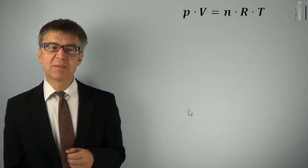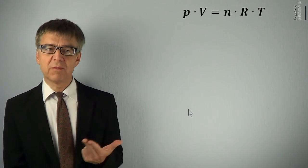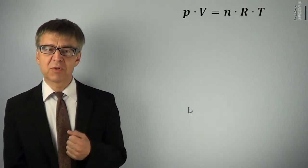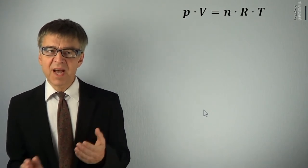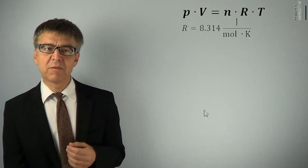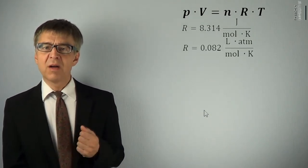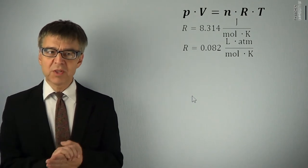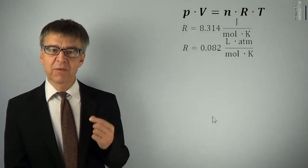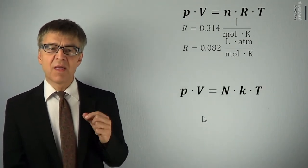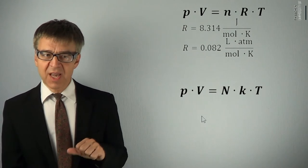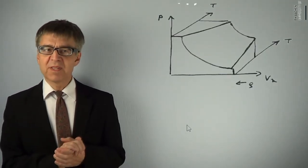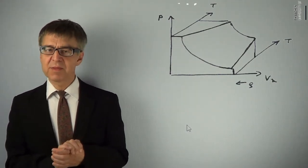The ideal gas law describes the states of all gases and gas mixtures. It is often formulated as P times V equals N times R times T. P pressure, V volume, N number of moles, T temperature and R the universal gas constant. In SI units, the gas constant is 8.314 joule per mole and Kelvin or 0.082 liter atmospheres per mole and Kelvin. If we do not want to use the number of moles N or the number of gas particles N, we have to use the Boltzmann constant K instead of R. With the ideal gas law, we are able to calculate any state on this PVT surface.